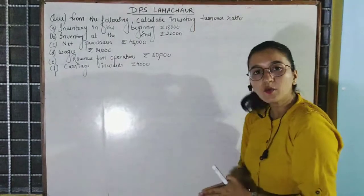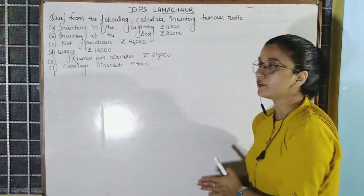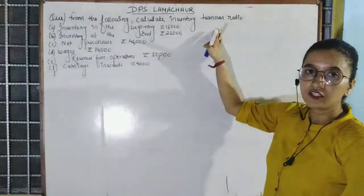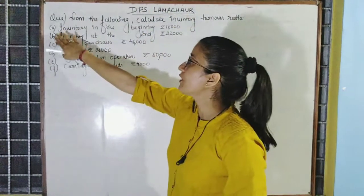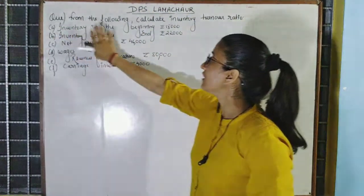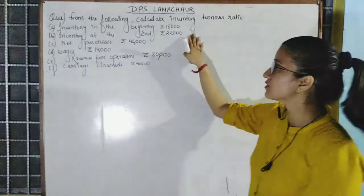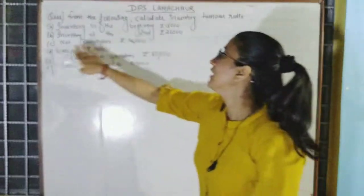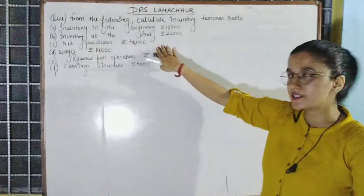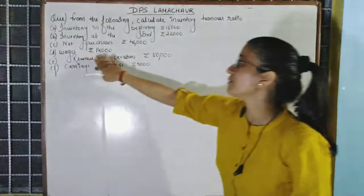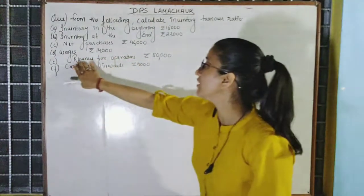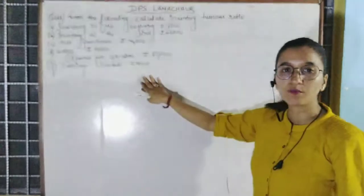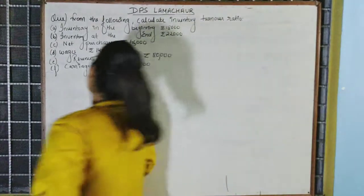Here is a question based on inventory turnover ratio. From the following data, calculate inventory turnover ratio: inventory in the beginning Rs. 80,000; inventory at the end Rs. 22,000; net purchases Rs. 46,000; wages Rs. 40,000; revenue from operations Rs. 80,000; and carriage inwards Rs. 4,000.